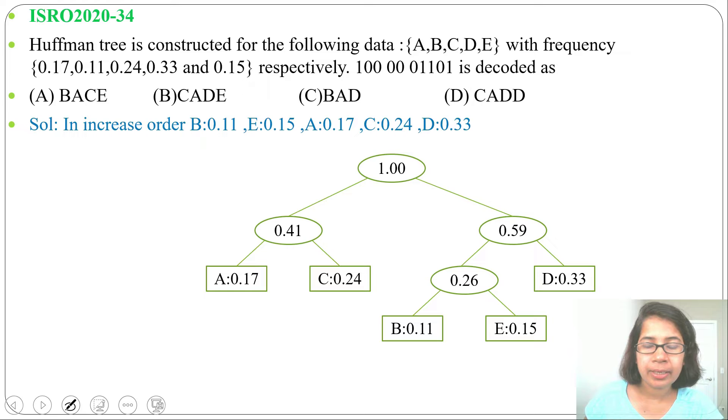Next we will add 0 and 1 with each level. Left child will be 0 and right child will be 1, so 0, 1, then 0, 1, here also 0, 1, 0, 1.